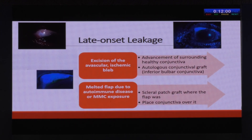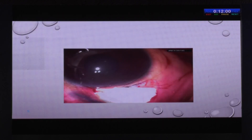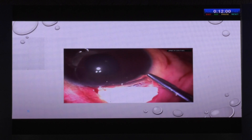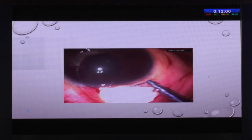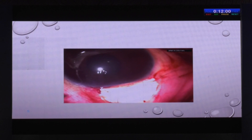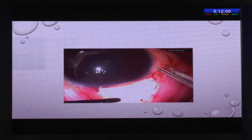If the scleral flap is totally melted, you have to use a scleral patch graft and advance conjunctiva over it to suture. You need to warn the patient that the pressure is going to rise. Here you can see a late-onset bleb leak for which a scleral patch graft is being placed.